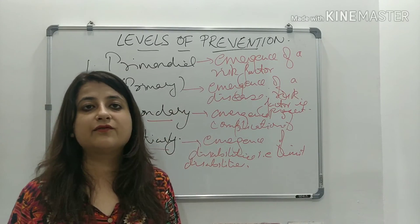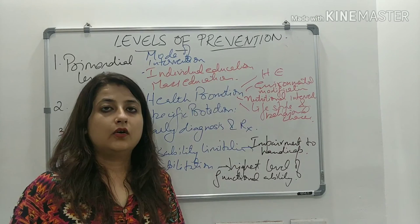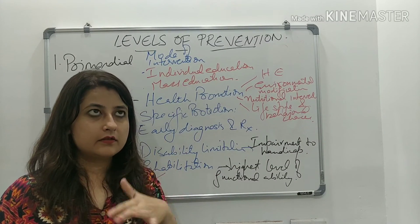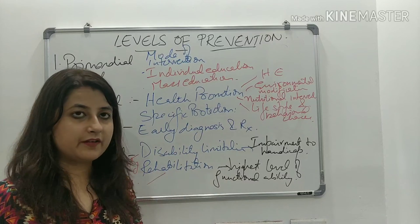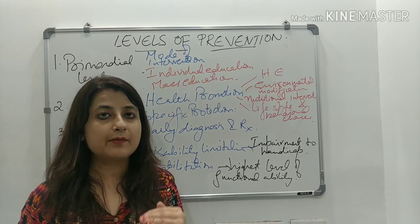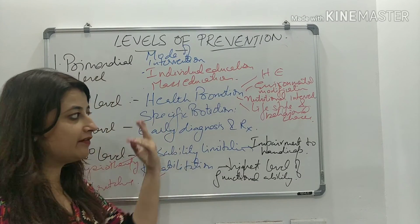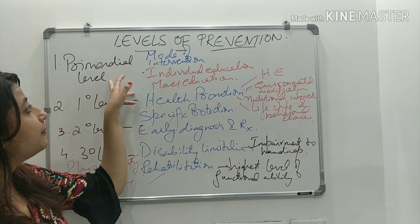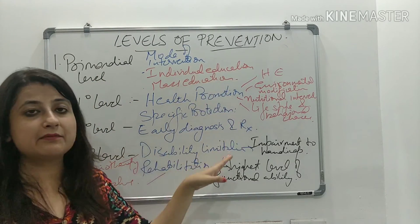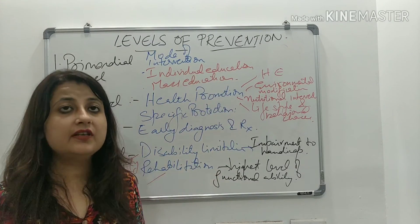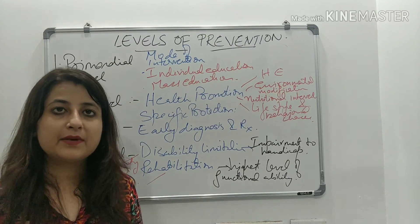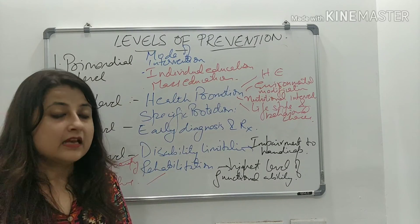This is how the levels of prevention work. Having understood the levels of prevention, there are certain modes of interventions applied at each level. For primordial level we have individual education and mass education. This is basically focused towards achieving primary level of prevention.